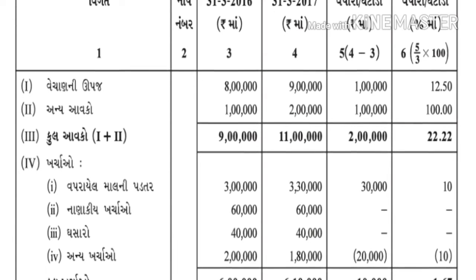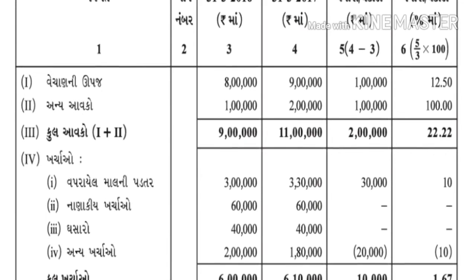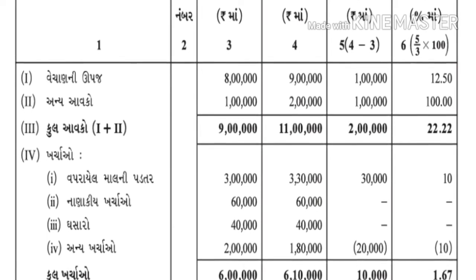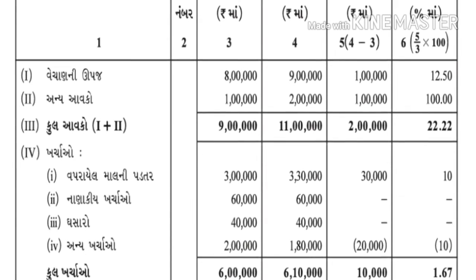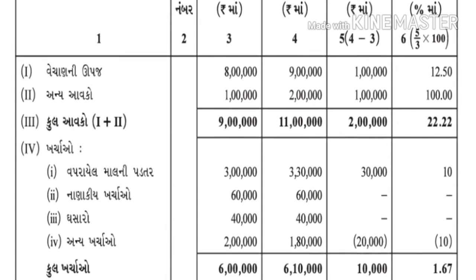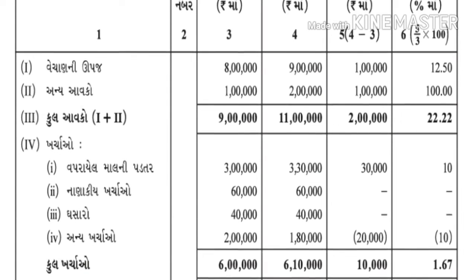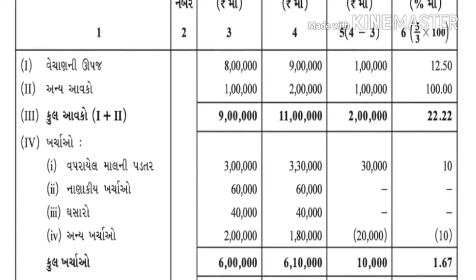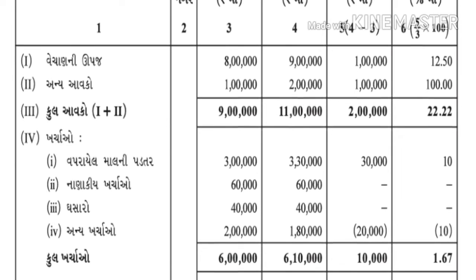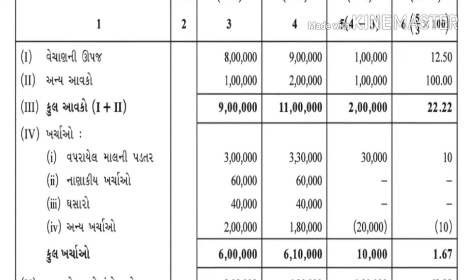વધારો કેટલો થયો - 2 લાખ - મળી ગયો. અને હવે 6ઠ્ઠું ખાનું - ટકાવારી - શોધો. ટકાવારીમાં - સાઠ હજાર માઈનસ સાઠ હજાર - એટલે શૂન્ય. ત્યાં ડૅશ કરેલો છે, એનો મતલબ 2016 અને 2017 - બંનેમાં ખર્ચ સમાન છે - કોઈ વધારો કે ઘટાડો થતો નથી.